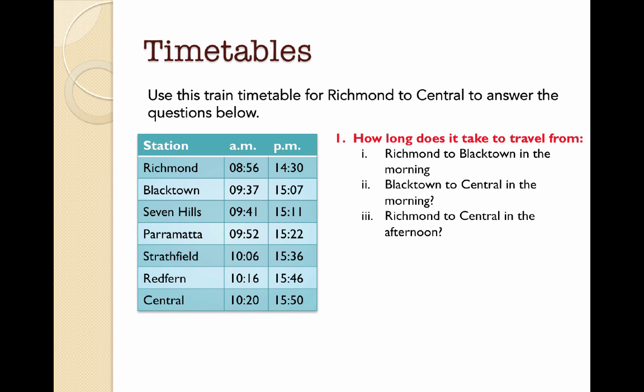This is a train timetable from Richmond to Central in the a.m. and in the p.m. You'll notice that the p.m. times are all in 24-hour time, so we need to be able to convert that in our heads to 12-hour time.